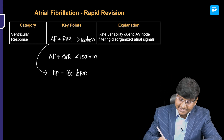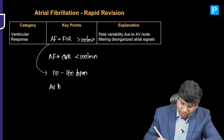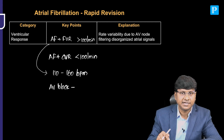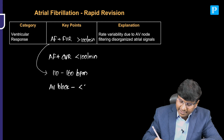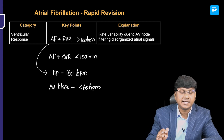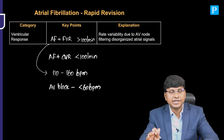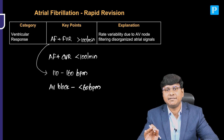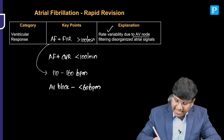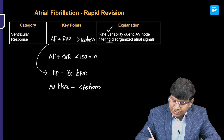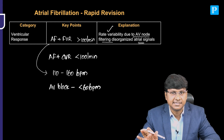In a scenario where there is AV block — for example, you have given digoxin in a patient with atrial fibrillation — the ventricular rate can be less than 60 beats per minute. That is what can happen if the individual is taking any AV blocking drug. Rate variability is there due to AV node filtering of disorganized atrial signals.